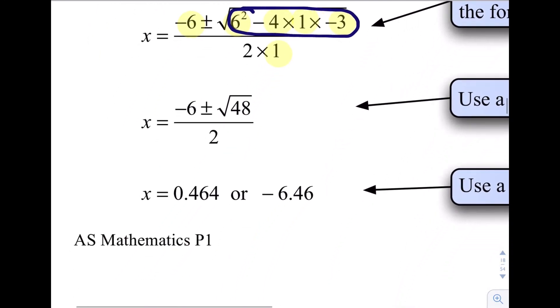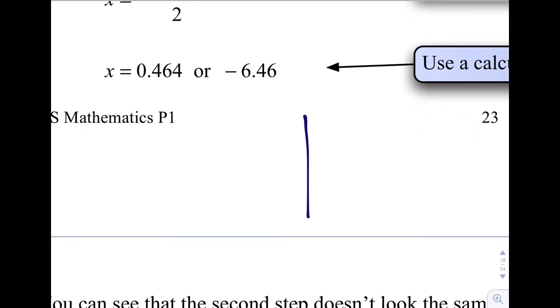So 36 minus negative 12 is 36 plus 12 is 48. So negative 6 plus or minus the square root of 48 over 2, which when you get your calculator out, gives you these two values of x. And remember what this means. If we were to draw the graph of this thing here, it means that on this quadratic here, the solutions, the roots, are negative 6.46 and positive 0.464.